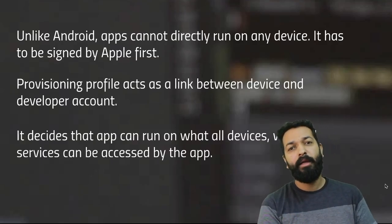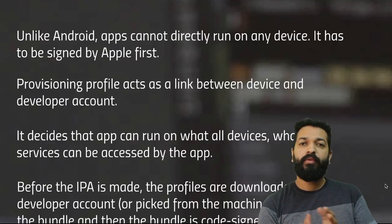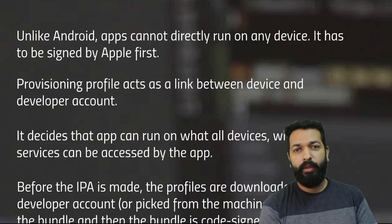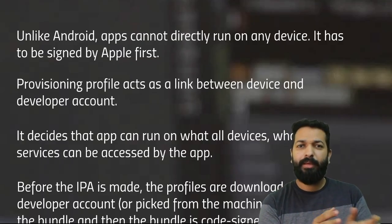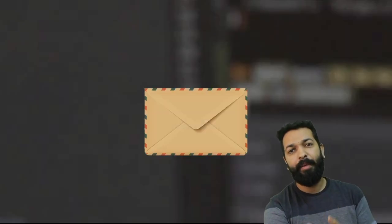A provisioning profile decides what devices our app can run on and what services it can access — this relates to entitlements, meaning what features our app is entitled to use, like app groups, push notifications, and everything else. Before the IPA is made, the profiles are downloaded from the developer account, embedded in the bundle, and then the bundle is code signed using certificates. Think of it like your company sending you to a conference — the organizers need extra information to verify you are the authorized person. Your company puts an extra piece of information in an envelope with your employee ID and conference ID, stamps and signs it. That extra piece of information in the envelope can be treated as a provisioning profile.